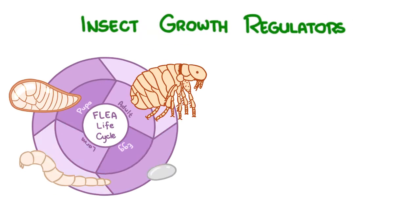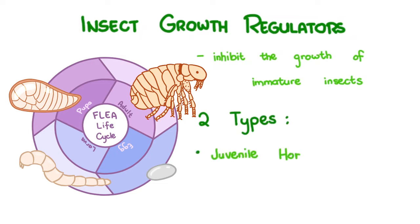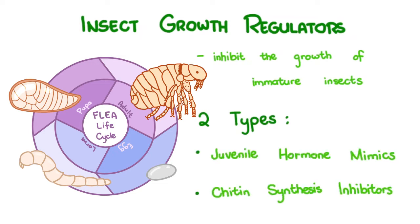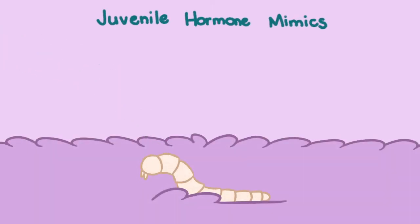Insect growth regulators interrupt the life cycle so that no new fleas are made. From the name itself, they inhibit the growth of immature insects. There are two types: juvenile hormone mimics and chitin synthesis inhibitors. Juvenile hormone mimics act like the natural insect's juvenile hormone, which prevents the larvae from completing their metamorphosis, and the larvae eventually die.